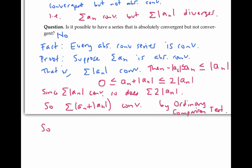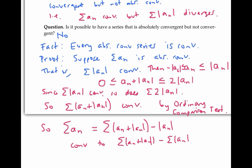Now, the series we want — the sum of a_n — can be written as the sum of (a_n plus the absolute value of a_n) minus the sum of the absolute value of a_n. We know that a series formed by subtracting the terms of two convergent series itself converges, so this converges to the difference of the sums. We've proved that if our series is absolutely convergent, then it must be convergent.